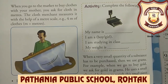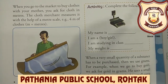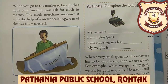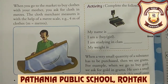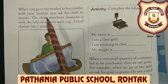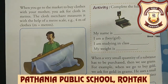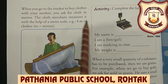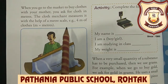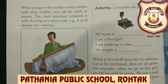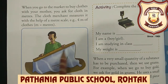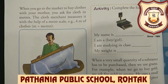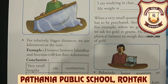The cloth merchant sells cloth in meters, so you tell him how many meters you need. The cloth merchant measures it with a meter scale. For example, if you require 4 meters of cloth, he will measure it with the meter scale and give it to you. For relatively bigger distances, we use kilometers as the unit.